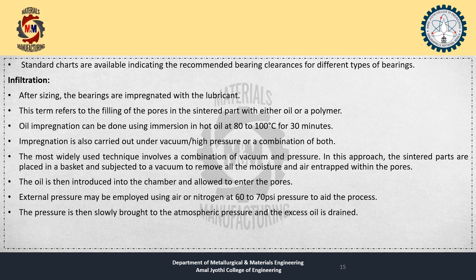Infiltration: After sizing, the bearings are impregnated with lubricant — this refers to the filling of the pores in the sintered part with either oil or a polymer. Oil impregnation can be done by immersion in hot oil at 80 to 100 degrees Celsius for 30 minutes. Impregnation is also carried out under vacuum, high pressure, or a combination of both. The most widely used technique combines vacuum and pressure: the sintered parts are placed in a basket, subjected to vacuum to remove moisture and air, then oil is introduced into the chamber and external pressure of 60 to 70 psi using air or nitrogen aids the process. The pressure is then slowly brought to atmospheric pressure and the excess oil is drained.